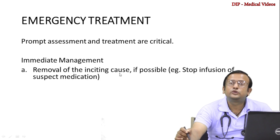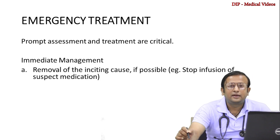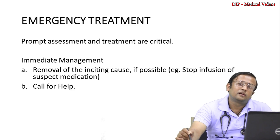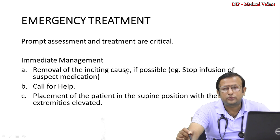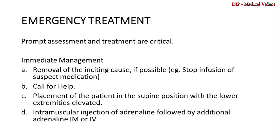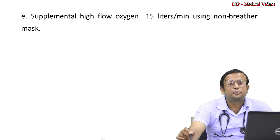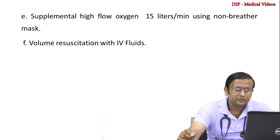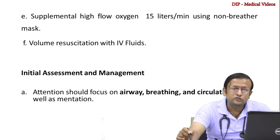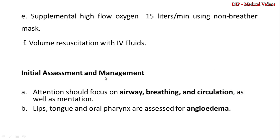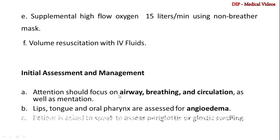For immediate management: remove the inciting cause if possible — for example, remove bee stings, stop infusion of suspected medication. Call for help. Place the patient in the supine position with lower extremities elevated. Give intramuscular injection of adrenaline, followed by additional adrenaline IM or IV if needed. Provide supplemental high-flow oxygen at 15 liters per minute using a non-rebreather mask. Initiate volume resuscitation with IV fluids. Initial assessment and management should focus on airway, breathing, and circulation. The lips, tongue, and oropharynx are assessed for angioedema, and the patient is asked to speak to assess periglottic or glottic swelling.